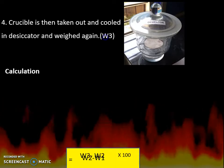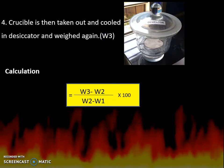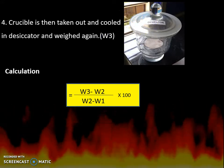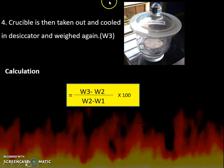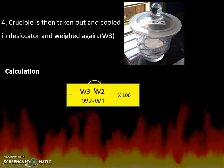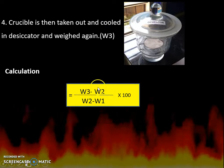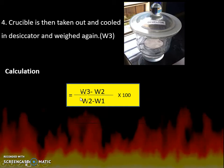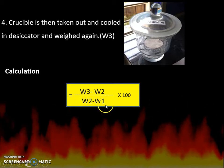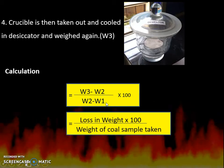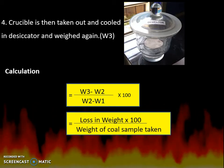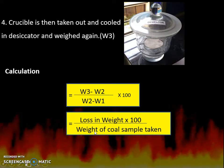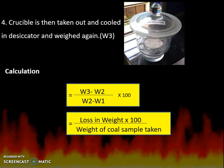The percentage moisture is calculated as: (W3 minus W2) divided by (W2 minus W1), multiplied by 100. Here, W3 minus W2 is the loss in weight — the moisture that was lost — and W2 minus W1 is the weight of coal sample taken. So the formula is: loss in weight multiplied by 100, divided by weight of coal sample taken.